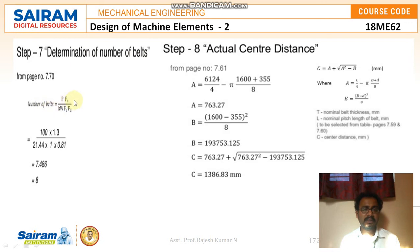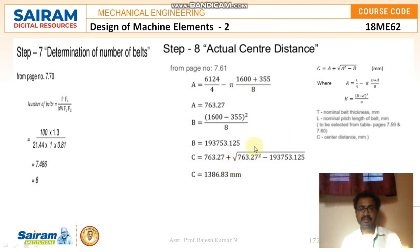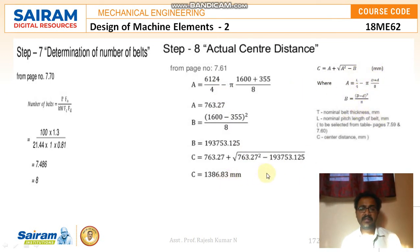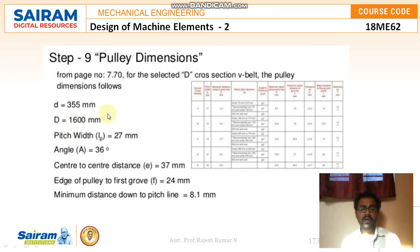Step 7: Determination of number of belts. Formula: N = (P × fa) / (k × W × fc × fd). Substituting all known values, the number of belts is 8. Step 8: Actual center distance. Using the formula C = A + √(A² − B), and substituting all derived values, the actual center distance is calculated as 1386.83 mm.